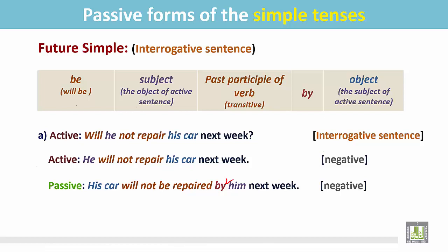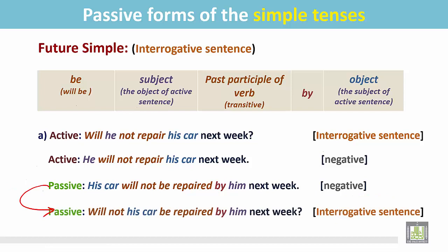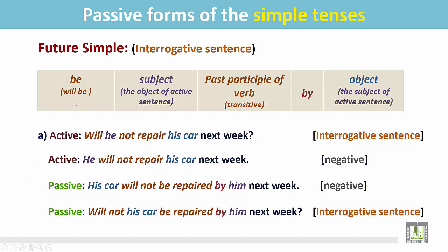Result: 'His car will not be repaired by him next week.' The sentence is still as a statement. We make it a question now: place the be verb 'will not' at the beginning of the sentence, before the subject. Final result: 'Will not his car be repaired by him next week?'